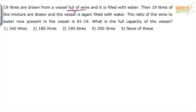There is a vessel full of wine from which we remove 19 liters of wine, and it is filled with water. So you remove wine and add water — 19 liters of wine is removed, 19 liters of water gets added. Now the moment you add water it becomes a mixture of wine and water. Then 19 liters of mixture is drawn and the vessel is again filled with water.